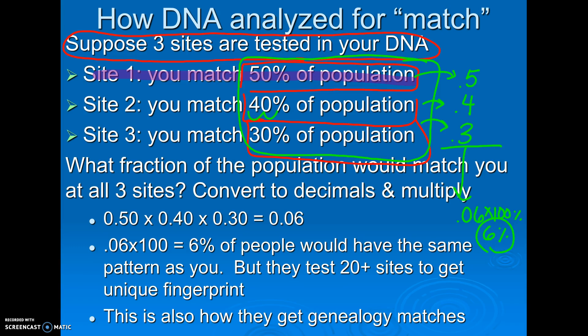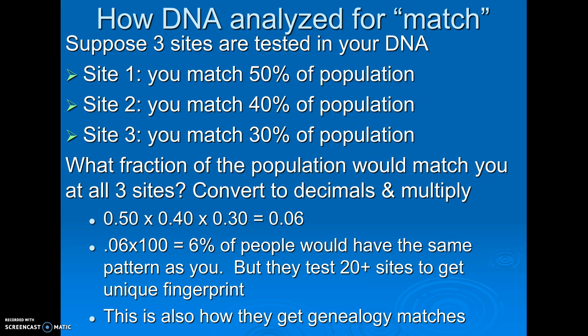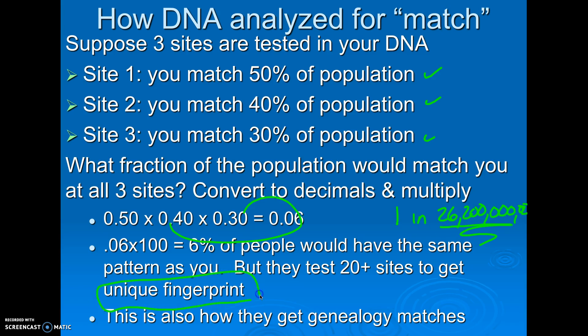Now that's still a lot of people — 6%. But the thing is they test like 20 different sites. What will actually come back to the police in the report — and I actually have one here — it says these are the sites that were tested. This is from DNA evidence collected from a window, and it says the frequency that the DNA profile matching person X would be expected to be found in another person in the population is one in 26,200,000,000. Because they tested so many cut sites and used the product rule, the chance of somebody else having the same exact pattern at every one of those sites as this person is more than basically the number of people on Earth. So the pattern does become a unique fingerprint to the individual person.